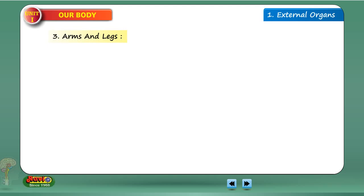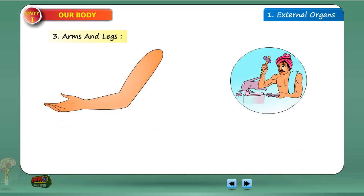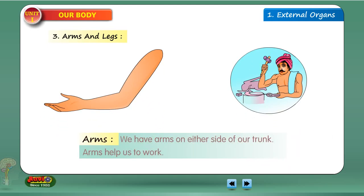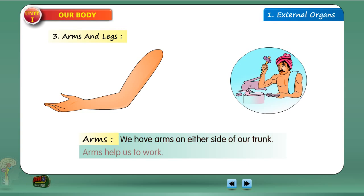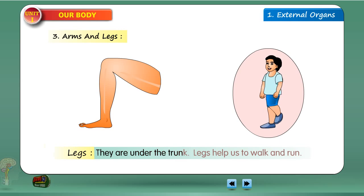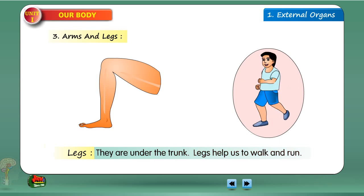We have arms on either side of our trunk. Arms help us to work. Legs are under the trunk. Legs help us to walk and run.